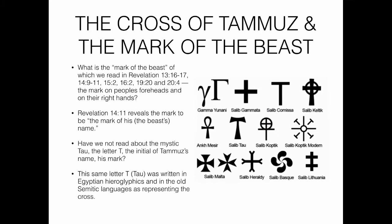What is the mark of the beast in Revelation 13, 14, 15, 16, 19, and 20? The mark on people's foreheads and right hands — Revelation 14:11 reveals it to be the mark of the beast's name. Have we not read about the mystic tau, the letter T, the initial of Tammuz's name? This same letter T or tau was written in Egyptian hieroglyphics and in old Semitic languages as representing the cross. The image to the right shows the cross in many different cultures — the Egyptian ankh, the tau, and all different kinds of crosses showing how it evolved.